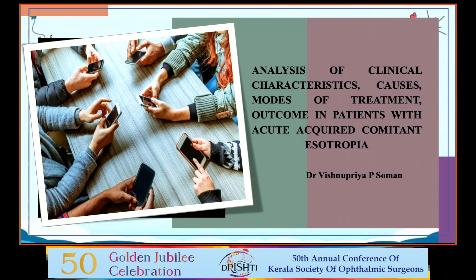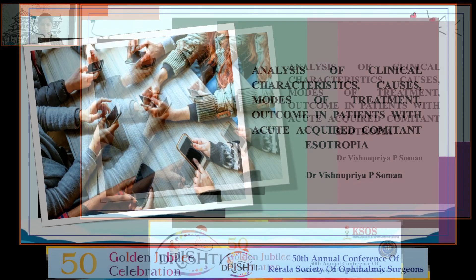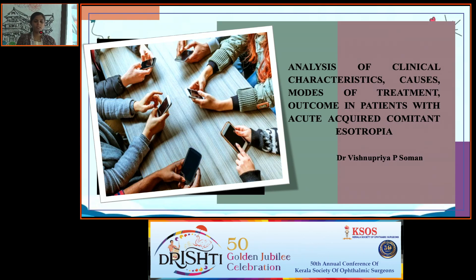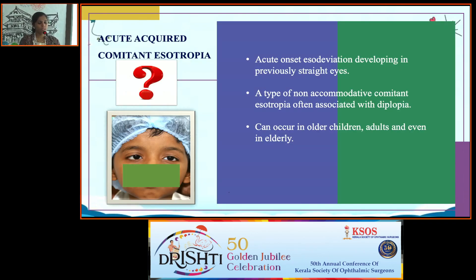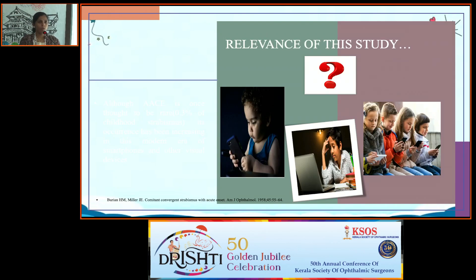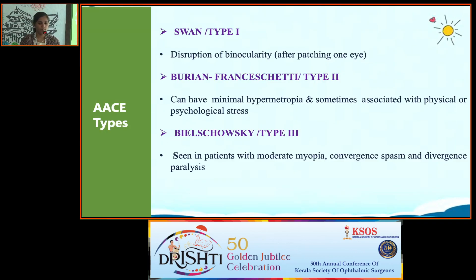Next is Dr. Vishnupriya Somant. Good morning. My topic is 'Analysis of Clinical Characteristics, Causes, Modes of Treatment, and Outcome in Patients with Acute Comitant Esotropia.' Acute comitant esotropia is an acute-onset iso-deviation developing in previously orthotopic individuals. It is a type of non-accommodative esotropia often associated with diplopia, occurring in older children, adults, and the elderly. Although it represents only 0.3% of total strabismus, its incidence is increasing in this modern era of smartphones and visual devices.